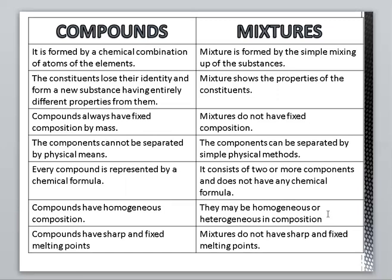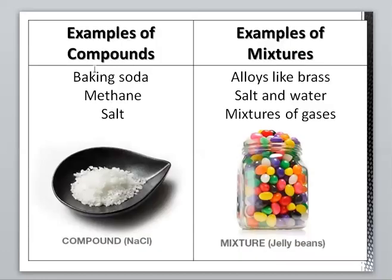Compounds have a homogeneous composition, whereas mixtures may be homogeneous or heterogeneous. Compounds have sharp and fixed melting points, which can help identify them. Mixtures do not have sharp and fixed melting points because they are formed of different types of substances in different ratios. Examples of compounds: baking soda, methane, and common salt (NaCl). Examples of mixtures: alloys like brass, salt and water solution, mixtures of gases, and jelly beans of different colors.